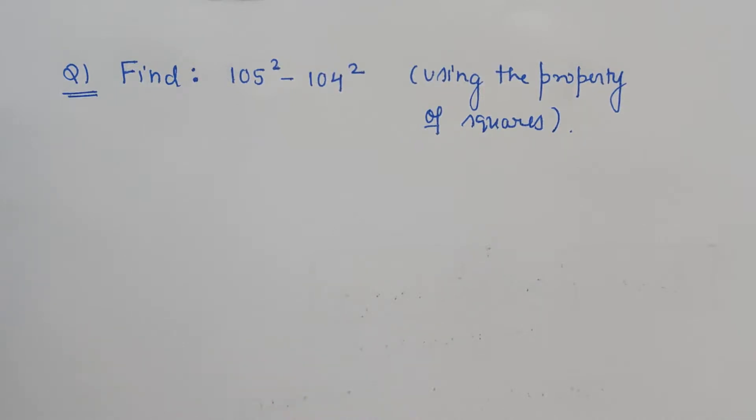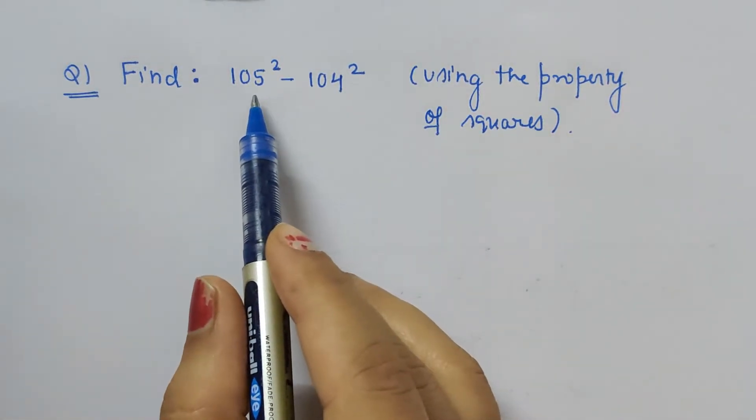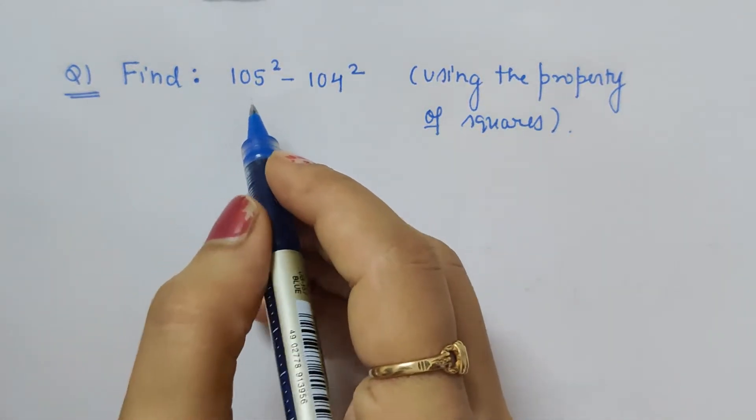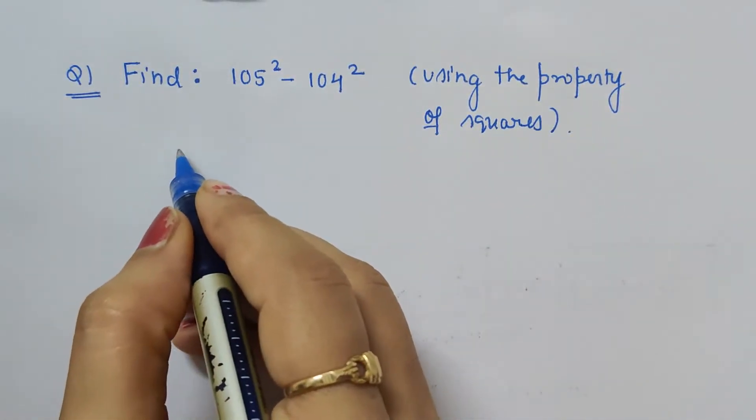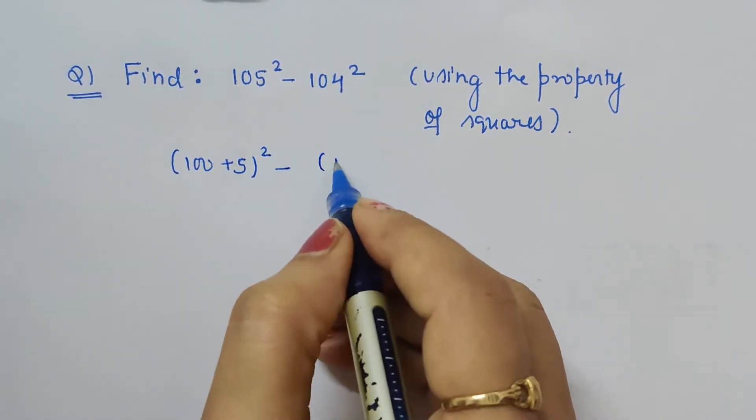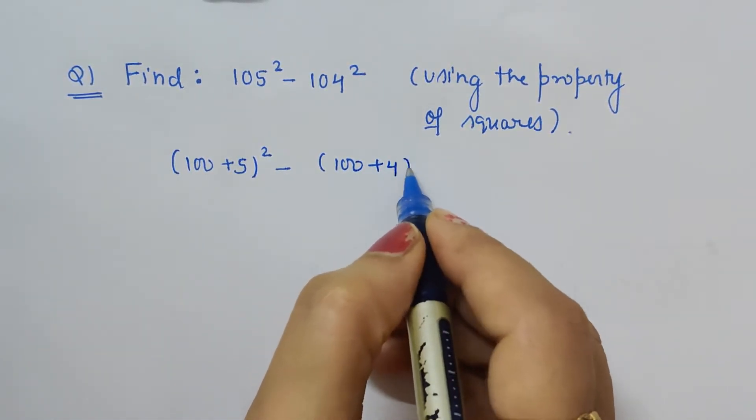Hello friends, in this video we are asked to find the value of 105² - 104² using the property of squares. We can write 105 as (100 + 5)² minus (100 + 4)².